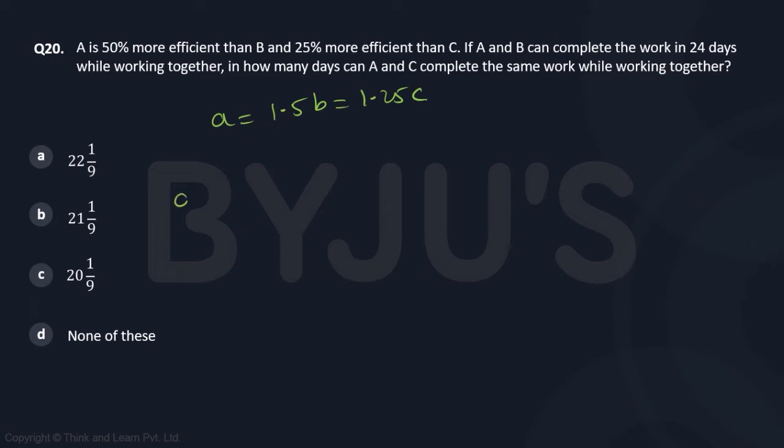So, A plus B can complete a work in 24 days. So, this is A plus C in time t. Now, A is 1.25 C, sorry, 1.5 B.